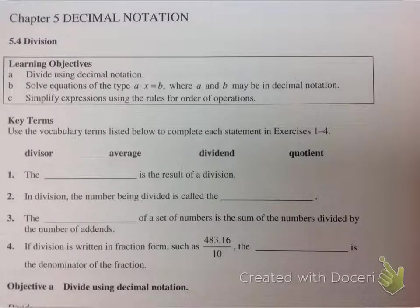Now let's look at division of decimals. The blank is the result of division, that is quotient. A quotient is the answer to any division problem.